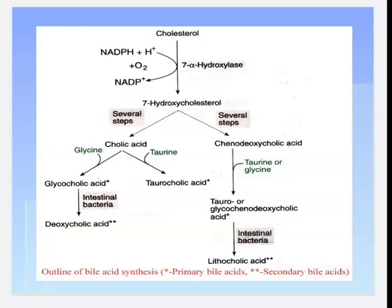Cholic acid is converted into two conjugated bile acids: the first is glycocholic acid, involving glycine, and the second is taurocholic acid, involving taurine. Similarly, chenodeoxycholic acid is converted into tauro- or glyco-chenodeoxycholic acid, with the involvement of taurine or glycine.